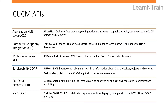CUCM provides different APIs for different purposes. The first one is CUCM AXL APIs, which are used for configuration management — for example, getting or fetching configuration data from CUCM, or adding, removing or updating CUCM configurations. The second one is CTI, which provides TAPI and JTAPI APIs.